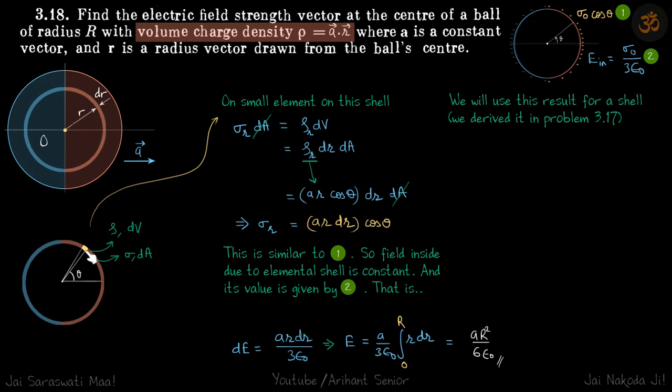So on that element, we can write charge in two ways. One by using the rho and volume of that element and second by using the surface charge density and area of the surface.